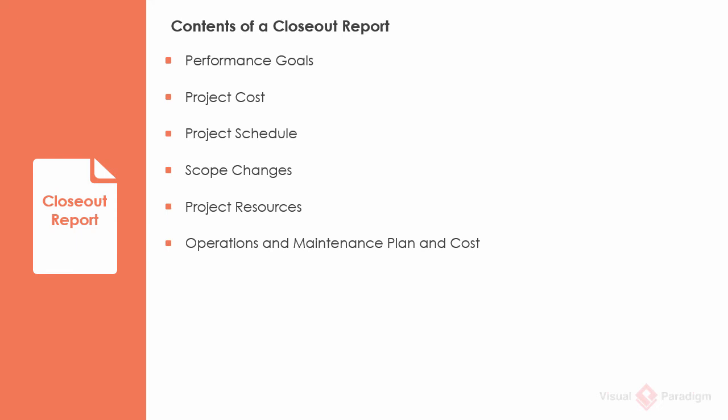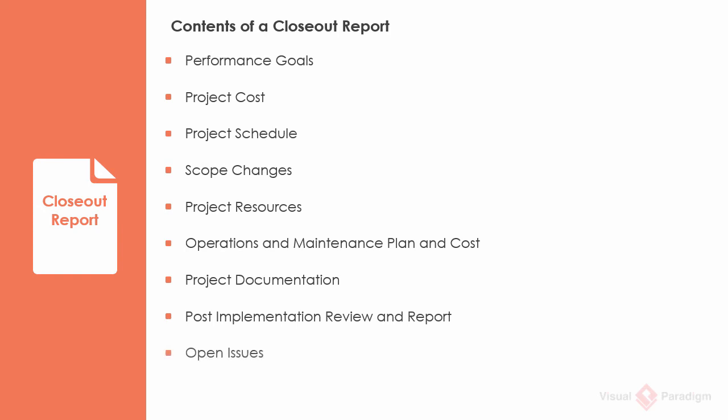Operations and maintenance plan and cost: the plan for operation and maintenance of project deliverables, stating the estimated annual cost of operations and maintenance. Project documentation: identify all project documentation materials stored in the project library or other repositories, and the type of media used and disposition of project documentation. Post-implementation review and report: identify the dates for completing post-implementation reports and the person responsible. Open issues: the open issues for resolution within the context of project closeout.